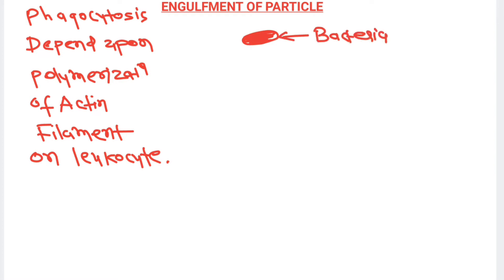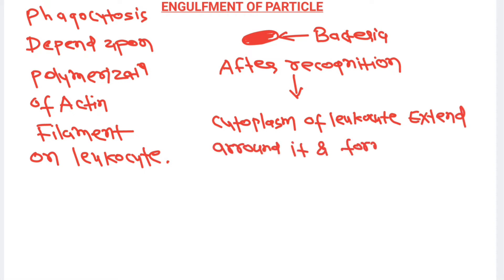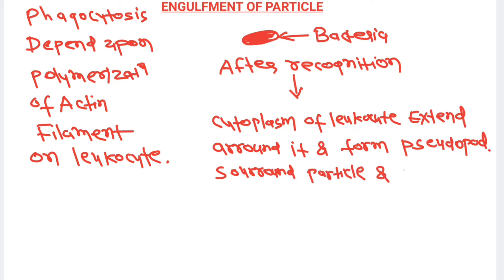After recognition by these receptors, the microbe will be engulfed by the phagocytic cell. Phagocytosis depends upon the polymerization of actin filaments on the leukocyte. After recognition by the receptors, actin filament polymerization occurs so that the cytoplasm of the leukocyte extends around the bacteria, forming a pseudopod that surrounds the particle and finally ingests it.